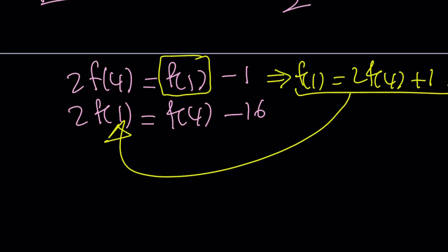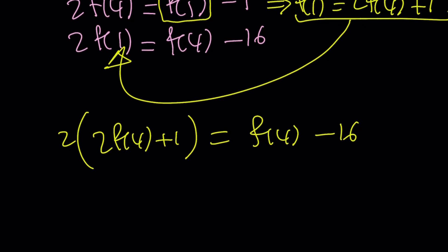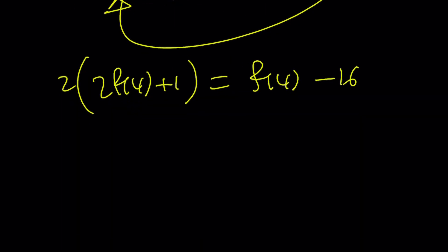Let's go ahead and replace f of 1 with 2f of 4 plus 1, and that equals f of 4 minus 16. Since the only variable is f of 4, we can solve for f of 4 here. And if you don't like the fact that I keep saying f of 1 is a variable, f of 4 is a variable, you can replace f of 1 with a and f of 4 with b, and then just solve for b.